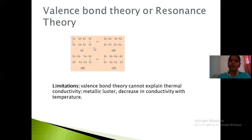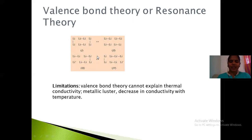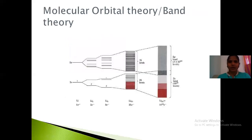The true metallic structure is a mixture of all the many possible bonding forms. The more possible resonance structures there are, the lower the energy and hence the more stable the structure. However, the valence bond theory has limitations: it cannot explain thermal conductivity, metallic clusters, or why conductivity is affected by temperature.